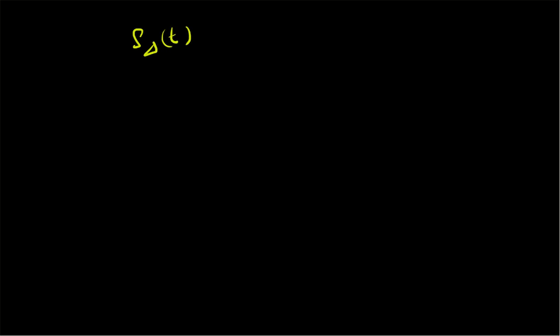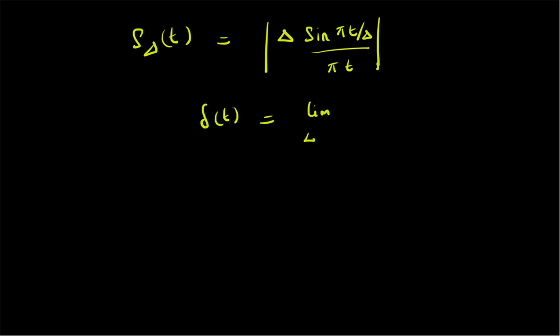Welcome. In this short video, let us look at an approximation to the delta function using the sinc function. Specifically, we define a function s_delta(t) = |δ · sin(πt/δ) / (πt)|, taking the absolute value to eliminate negative values. This is an approximation for the delta function, and as delta becomes smaller and smaller, delta(t) can be defined as the limit as δ→0 of s_delta(t).